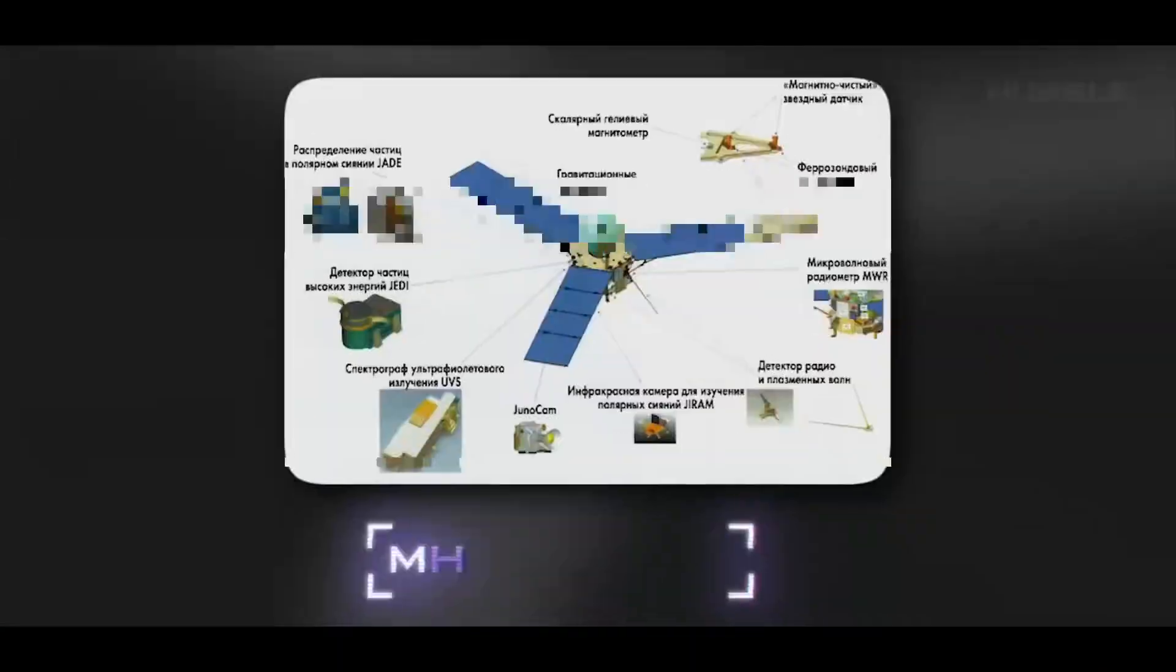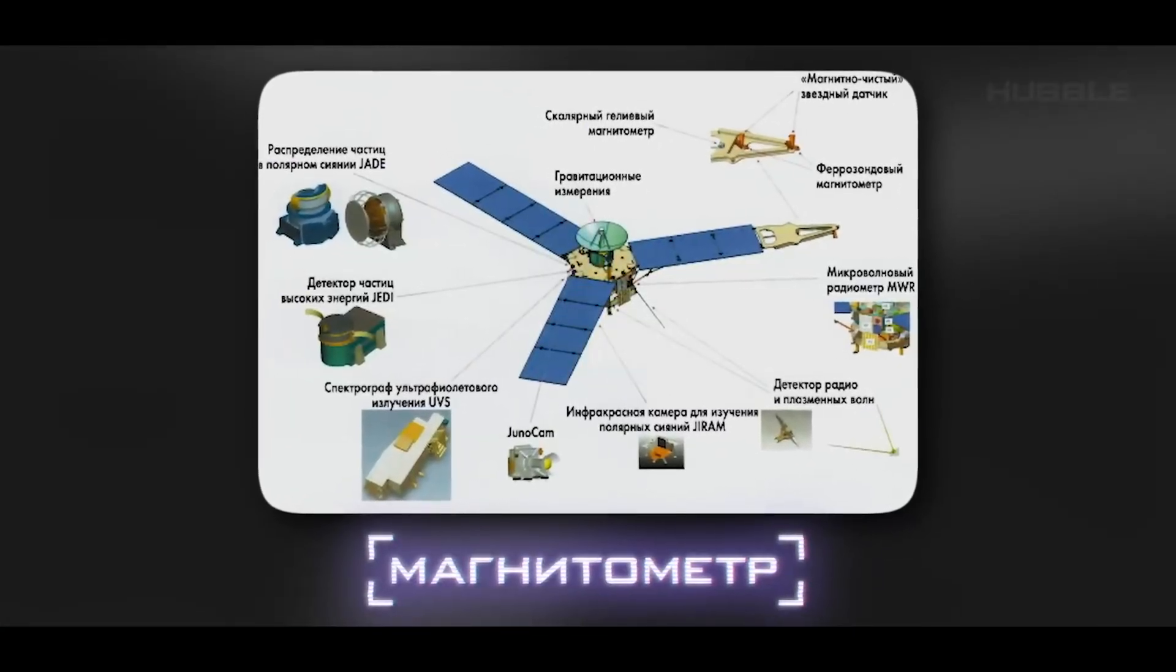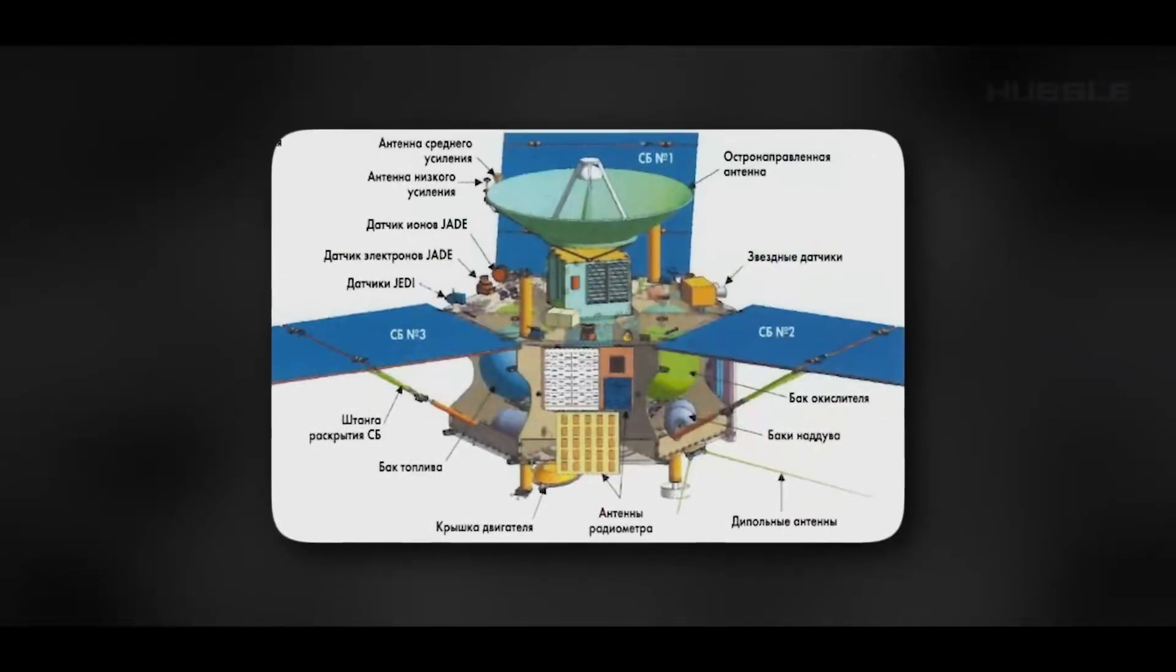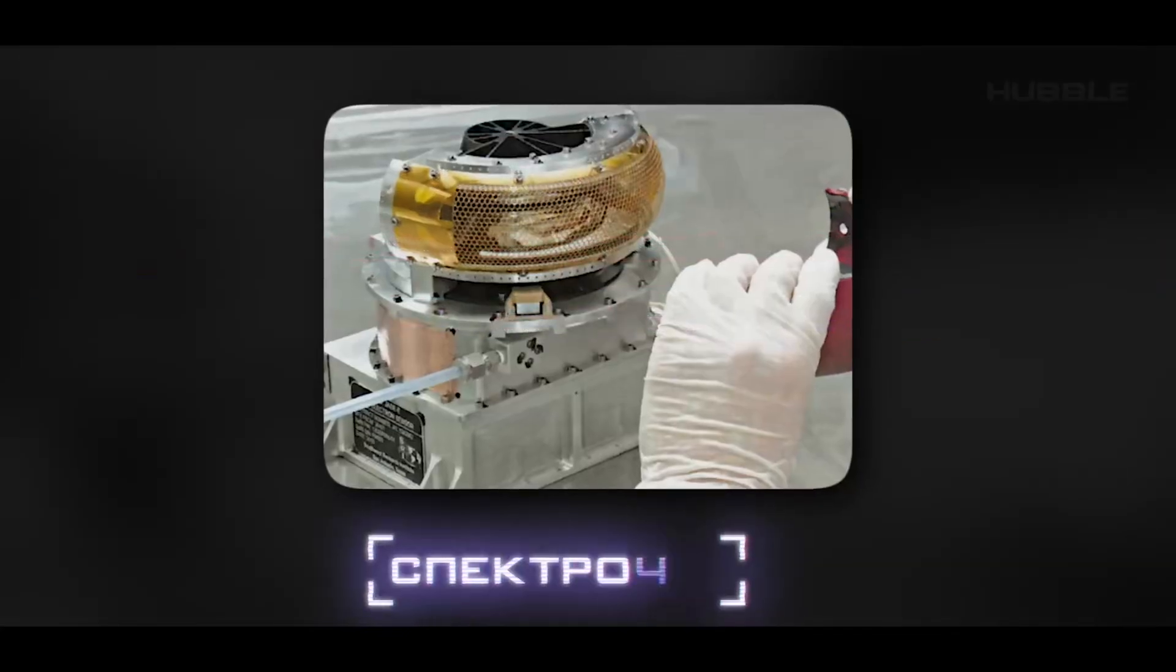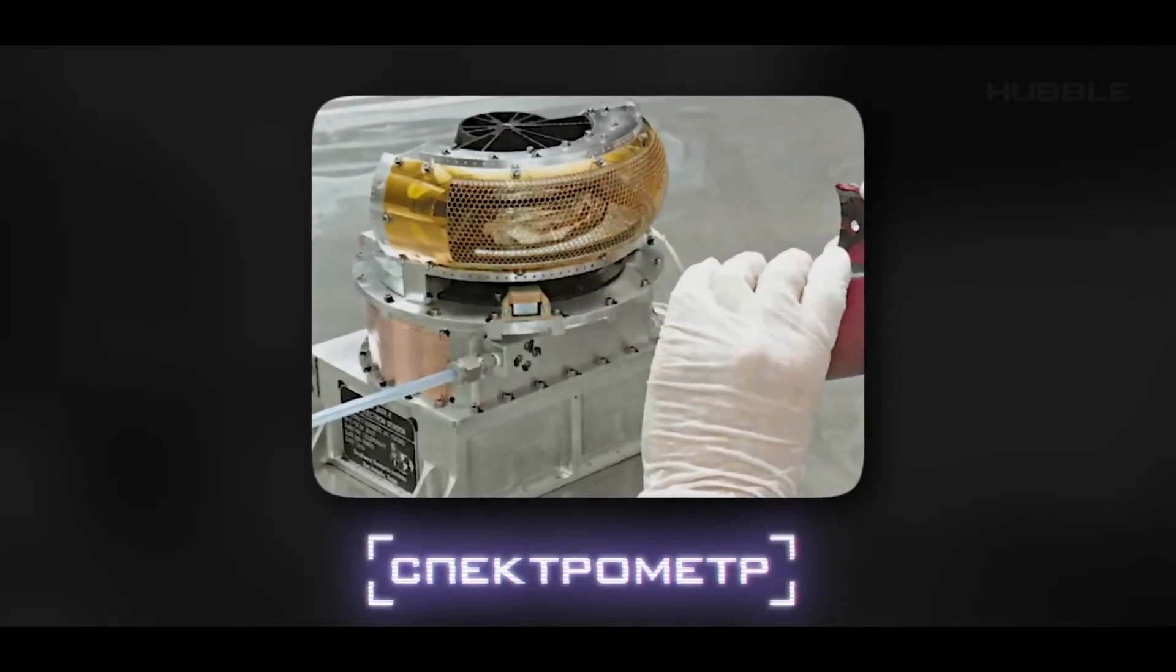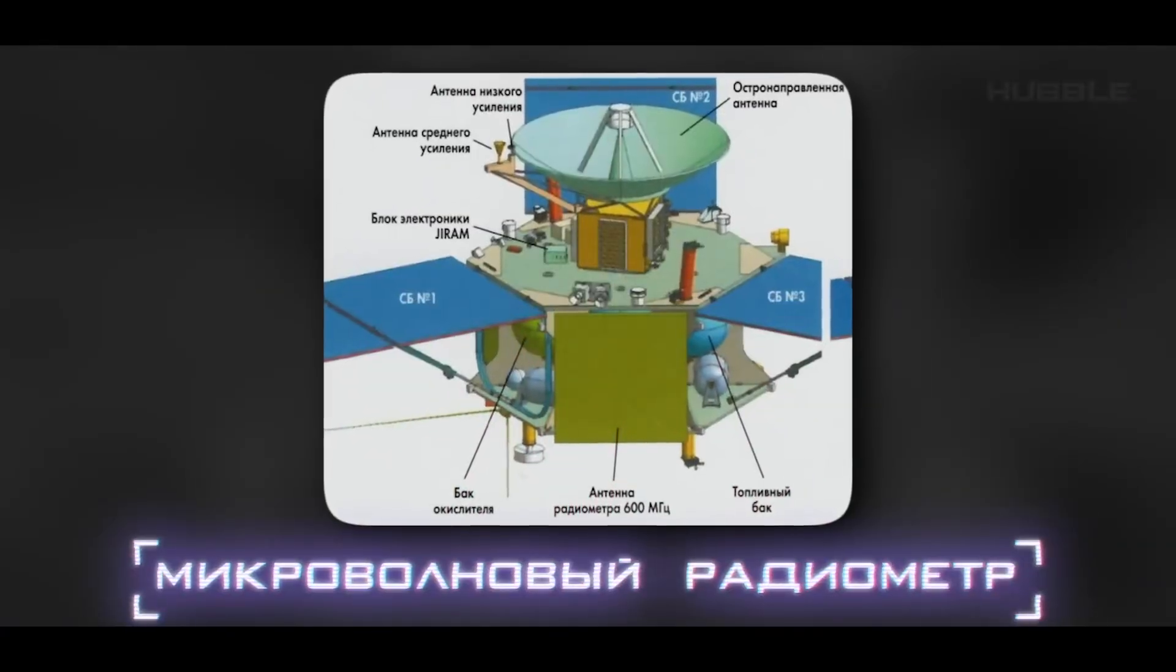What equipment was the probe fitted with to thoroughly study Jupiter and its moons? First of all, there is a magnetometer, which is attached to one of the solar panels. The device is designed to monitor the planet's magnetosphere. Juno is also equipped with a spectrometer for studying auroras, the only three-color video camera, and a microwave radiometer.